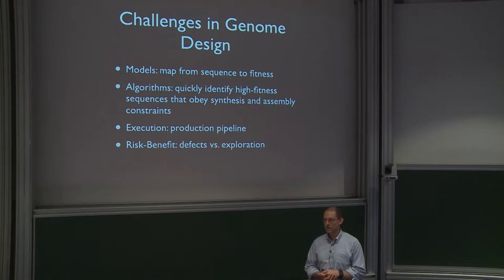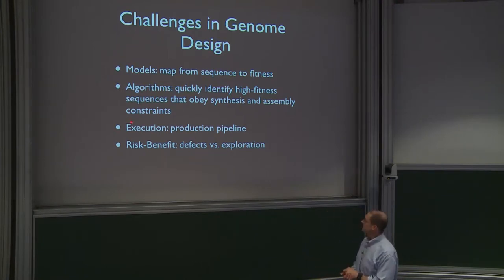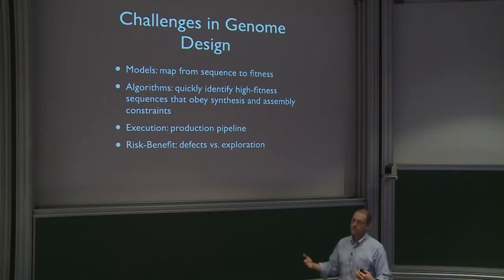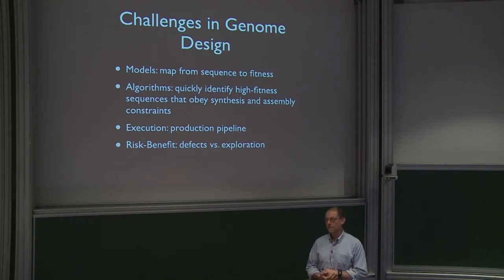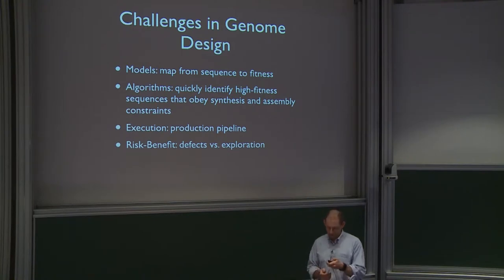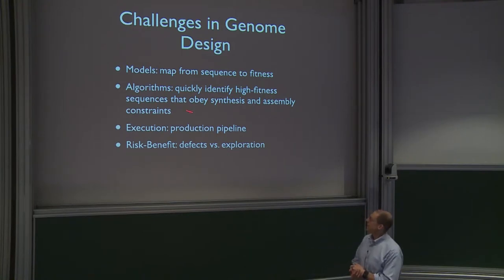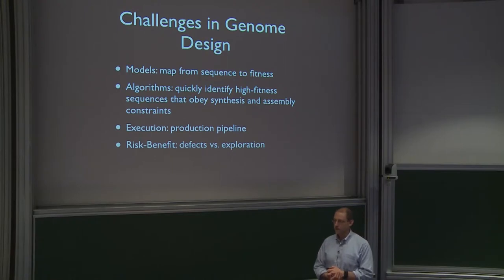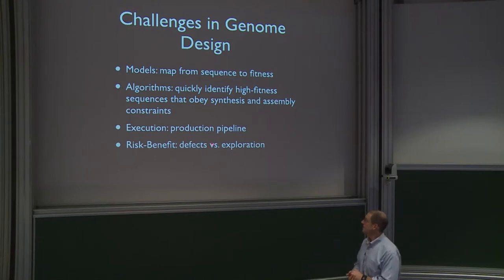Also the execution: putting all of this together in a production pipeline. When the human genome sequencing project started, there were lots of groups writing software to look at gel images, get DNA sequences, do assembly and sequence validation. Instead, it was a couple of people in my lab doing all the design. And risk-benefit: this to me is the most interesting — talking through the design choices, like why get rid of all the introns? One answer is 'why not?' but there were other changes we were thinking about making that we weren't sure about.